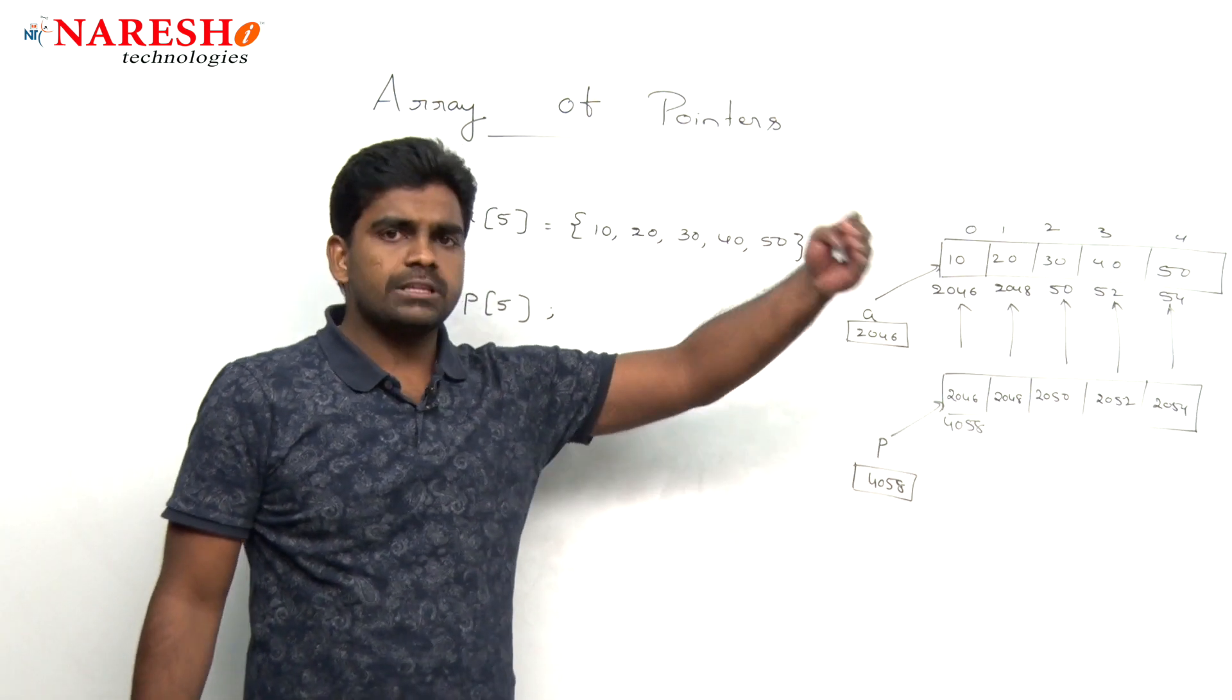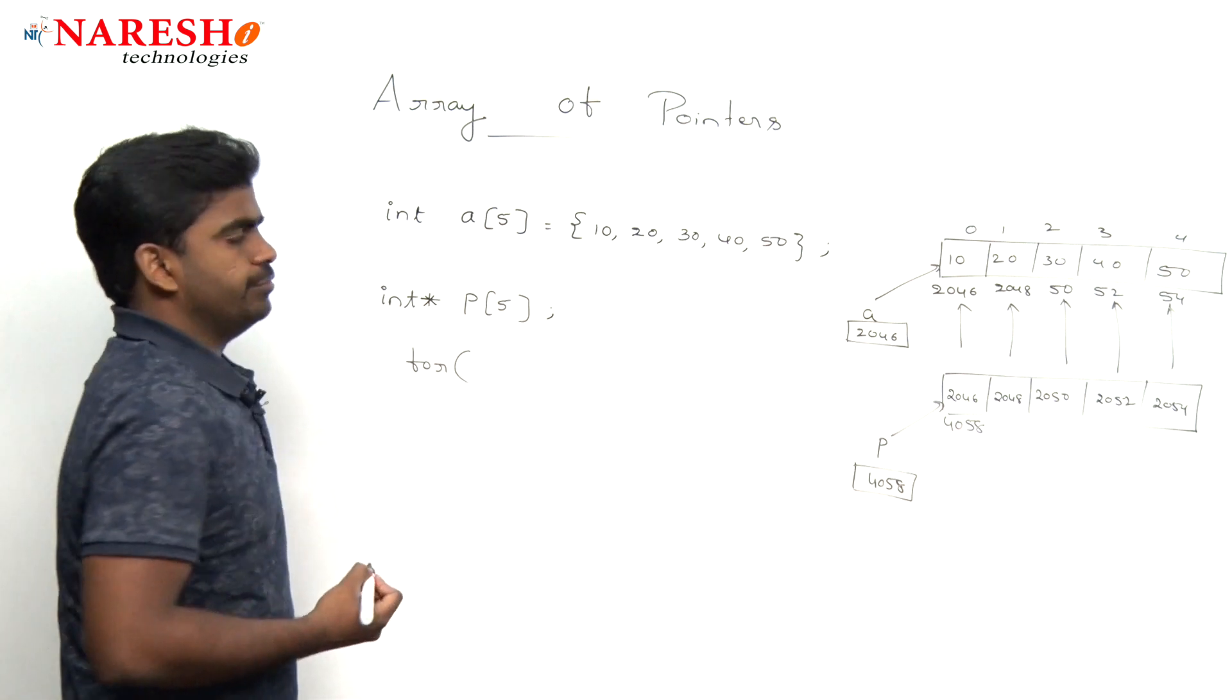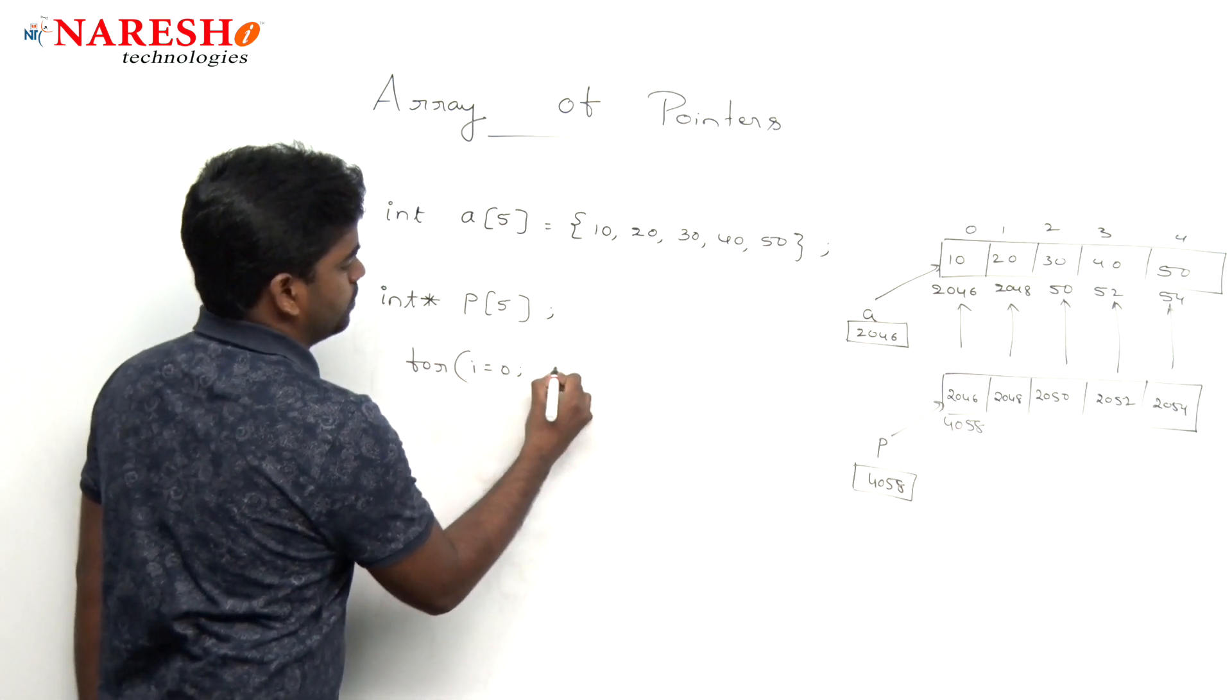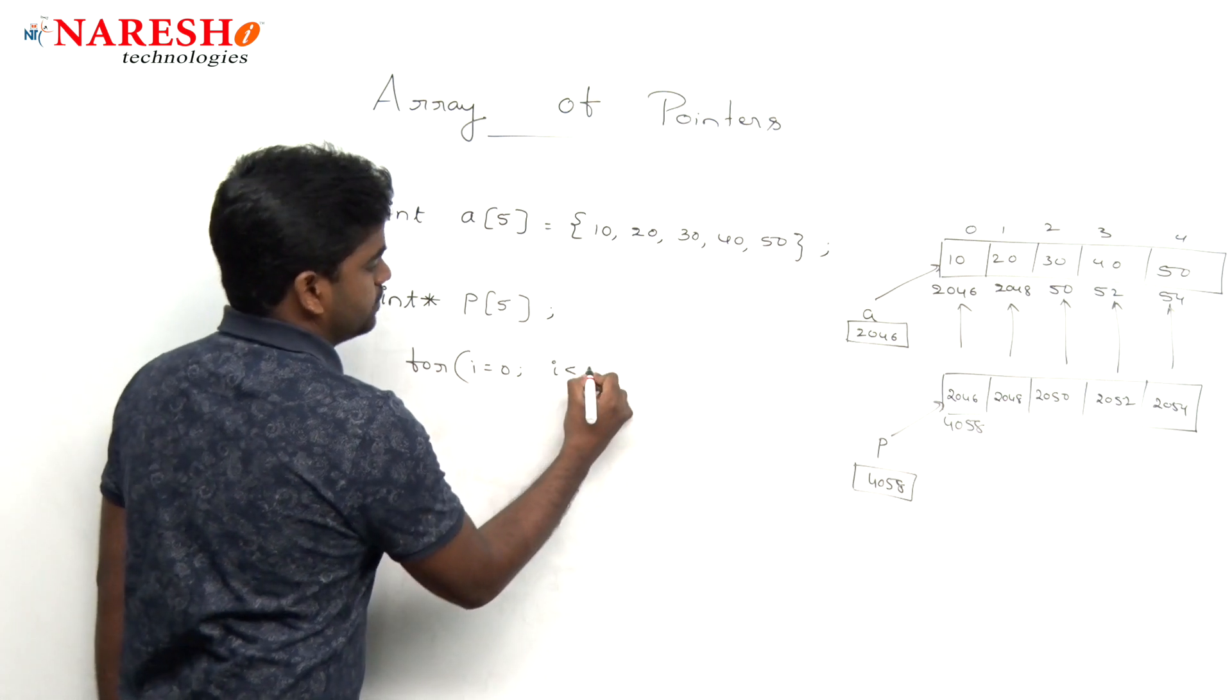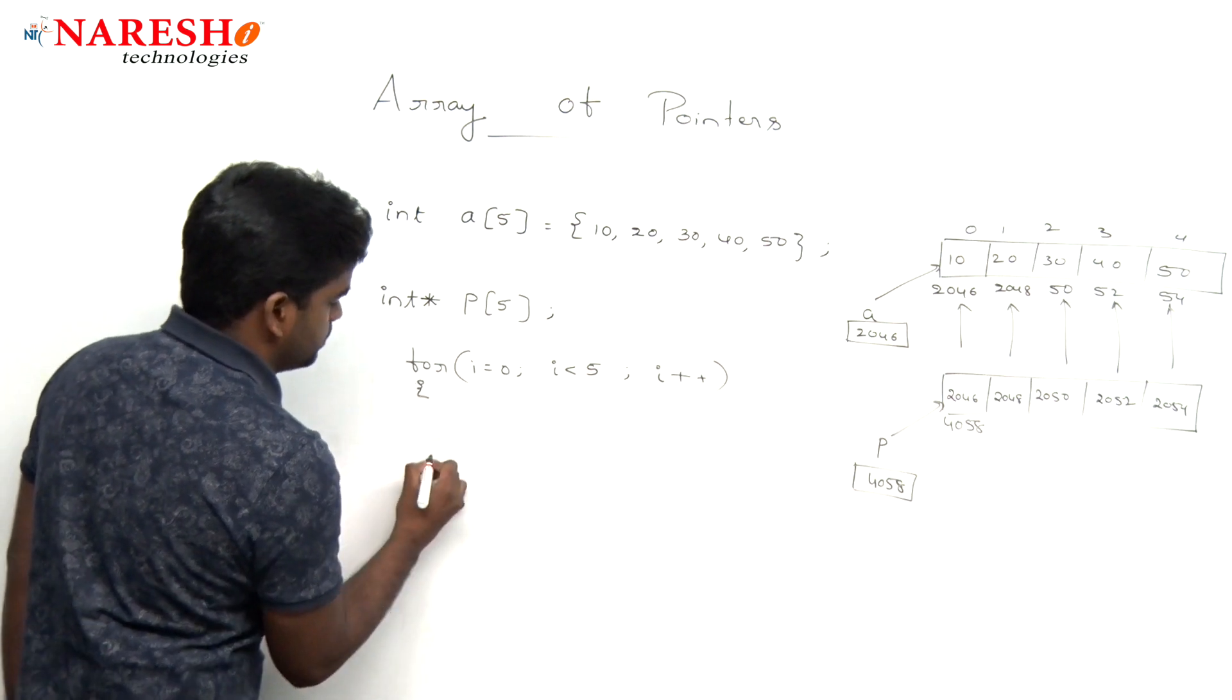How to store? More than one address, better we use a for loop. We are declaring one i variable, i value starts with 0, i is less than 5, i plus plus.